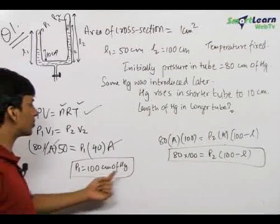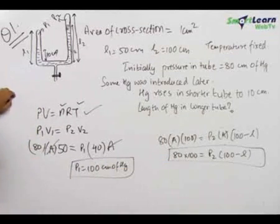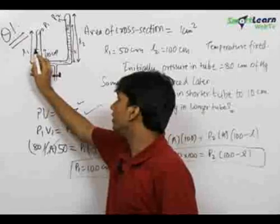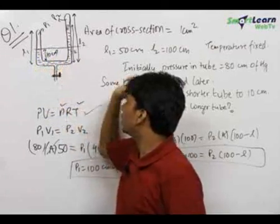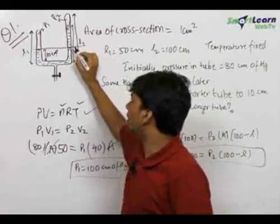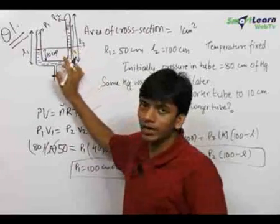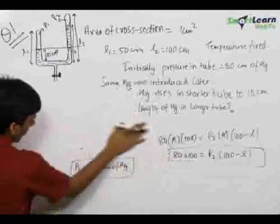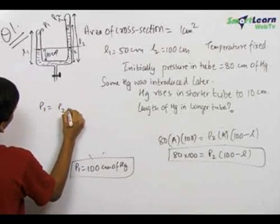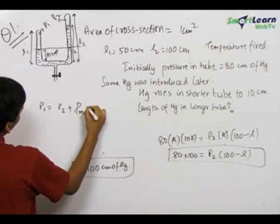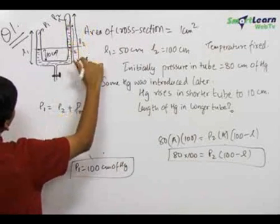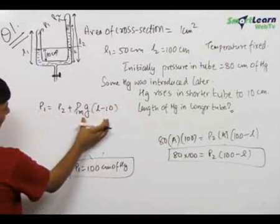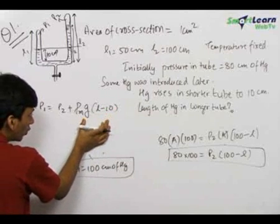We now have three variables — P1, P2, and L — so we need another equation. The third equation comes from the fact that in a liquid, pressure is always the same at the same horizontal level. Since this is a singly connected liquid, pressure at the same level must be equal. Therefore we can write: P1 = P2 + ρ_mercury × g × (L − 10), where (L − 10) is the height of the mercury column difference.